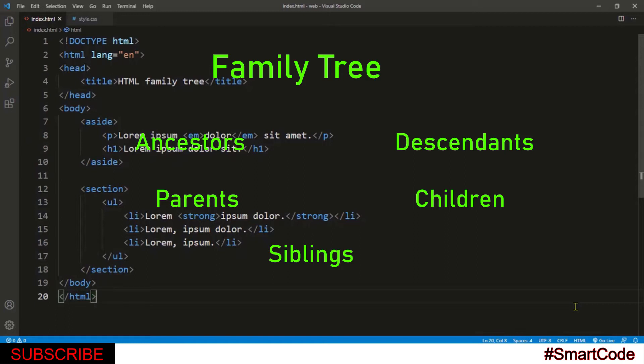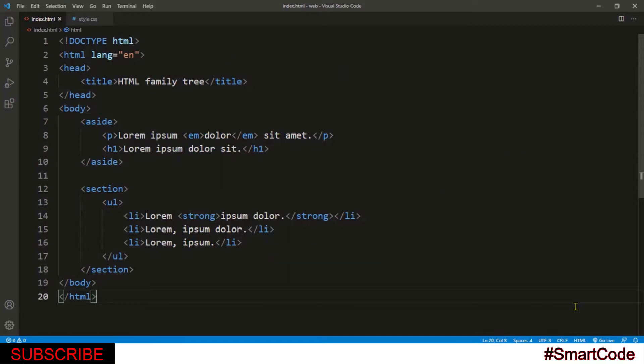So in this tutorial, you will learn HTML family tree using terms like parent, child, ancestor, descendant and sibling. Are you ready? Let's check it out.